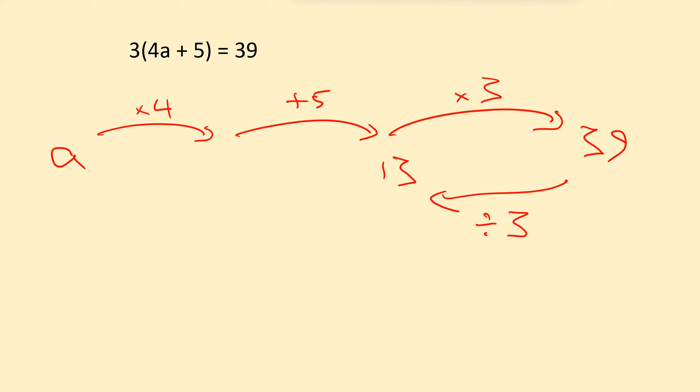We go step by step. So now we do 13 minus 5, because that's the opposite of the original plus 5. 13 minus 5 is 8. And then there's only one more step to go.